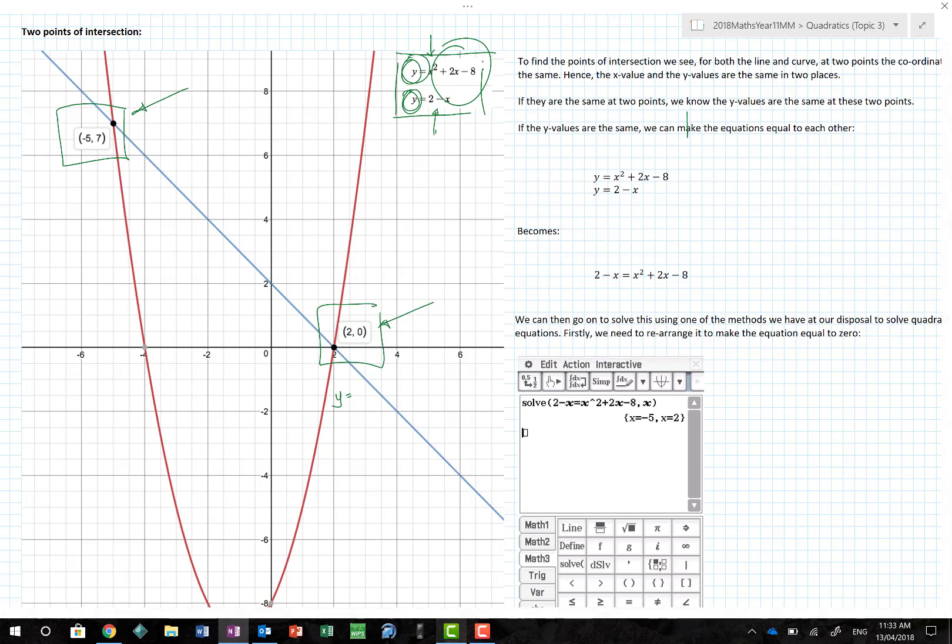If I have two equations and I know at certain points the y values are identical, it must mean that the other parts of those equations are identical too. If these two things here are equal, then these two things must also be equal. I can write my equation as 2 minus x equals x squared plus 2x minus 8.